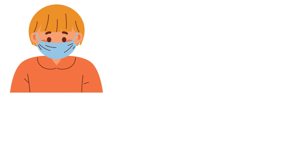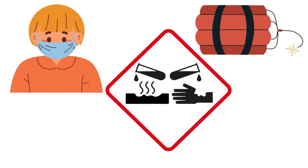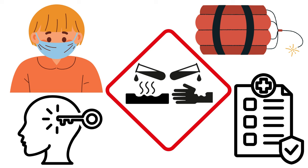In summary, understanding the nine dangerous goods classes is essential for ensuring the safety of people and the environment across various industries. From explosives to corrosive substances, each class presents unique challenges and requires specific precautions. By being aware of these classifications and following proper protocols, we can minimize the risks associated with these potentially hazardous materials and ensure a safer working environment for all.